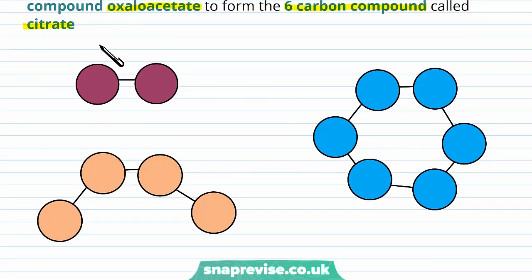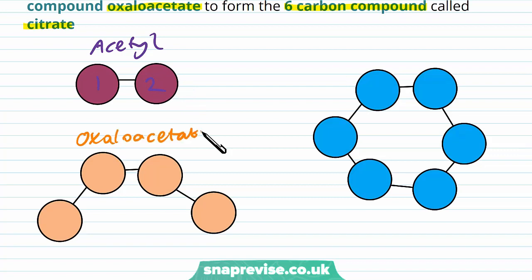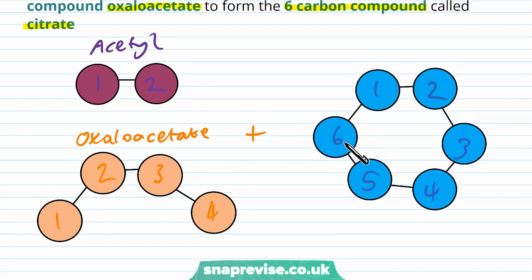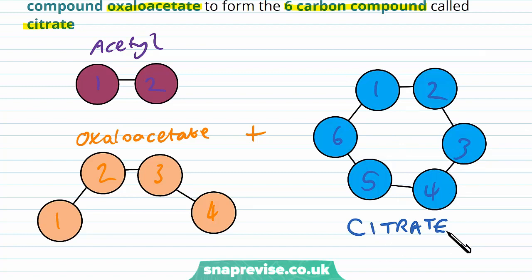Imagine we have our acetyl with two carbons, and there's another molecule called oxaloacetate which has four carbons. In the first step of the Krebs cycle, these get put together and they form a six-carbon molecule called citrate. Sometimes it helps to remember these in strange ways — for example, if you think of six, it sounds like 'cit', hence citrate. Little things like that can help you remember.